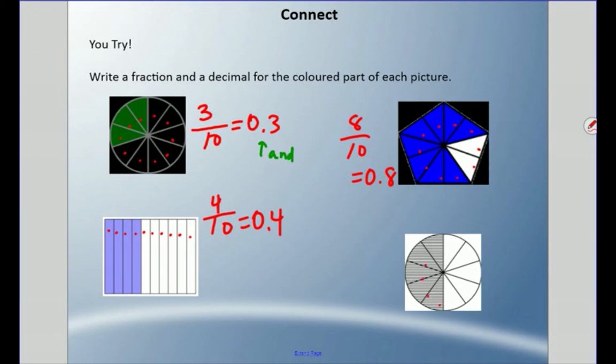And lastly, 1, 2, 3, 4, 5, 6, 7, 8, 9, 10. Five of them are colored in. Our fraction is 5/10, and our equivalent decimal is 0.5.